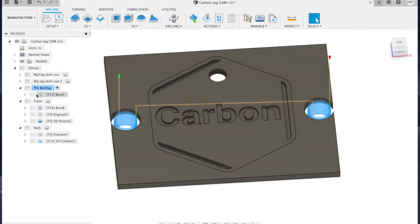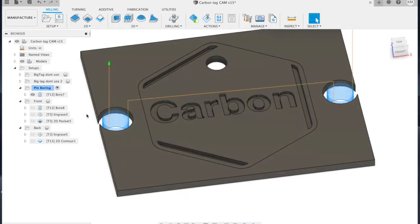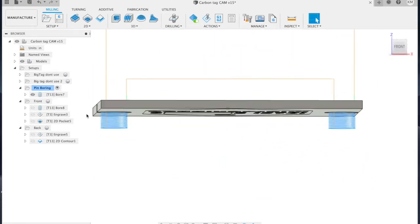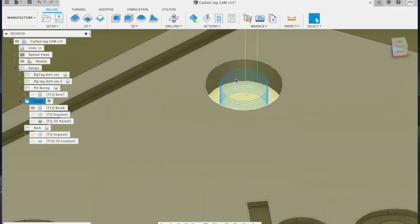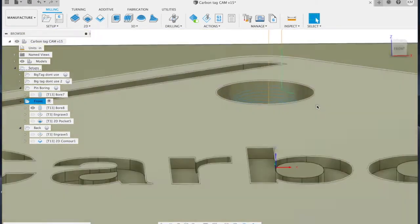The first toolpath is a boring operation for the indexing pins. You can see that this cuts clear through the stock and down into the spoil board. The second path is also a boring operation to cut the hole for the tag, but the depth is limited to the bottom of the stock.